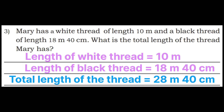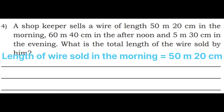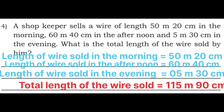Fourth problem: A shopkeeper sells wire of length 50 m 20 cm in the morning, 60 m 40 cm in the afternoon, and 5 m 30 cm in the evening. What is the total length of the wire sold? Morning = 50 m 20 cm; afternoon = 60 m 40 cm; evening = 5 m 30 cm. 0+0+0=0; 2+4+3=9; 0+0+5=5; 5+6+0=11, write 1 carry 1. Total = 115 meters 90 centimeters.